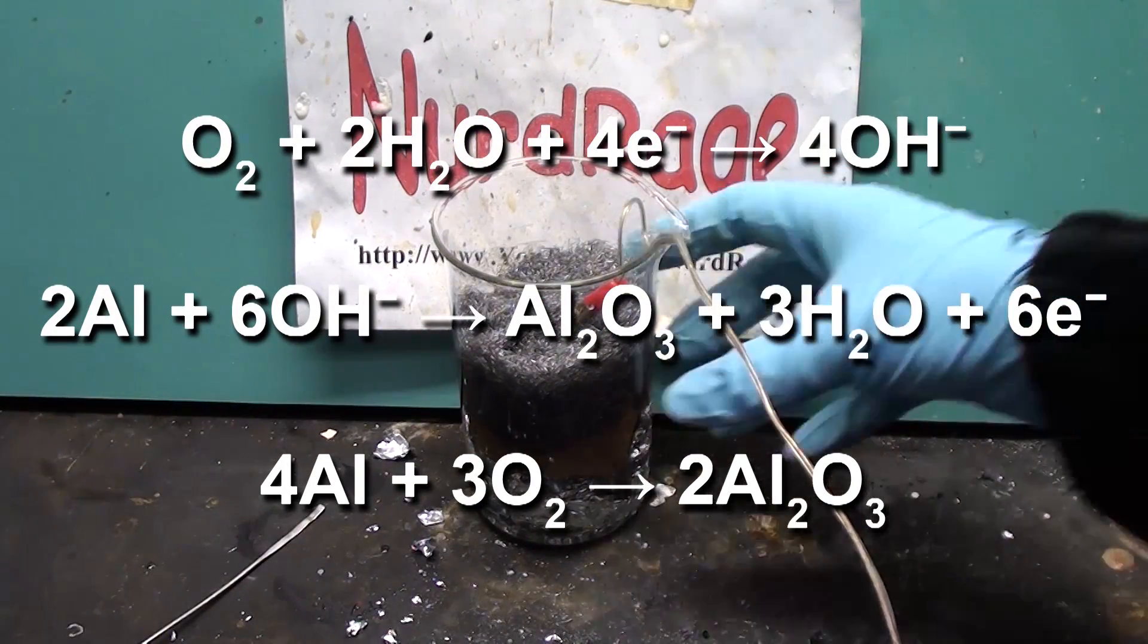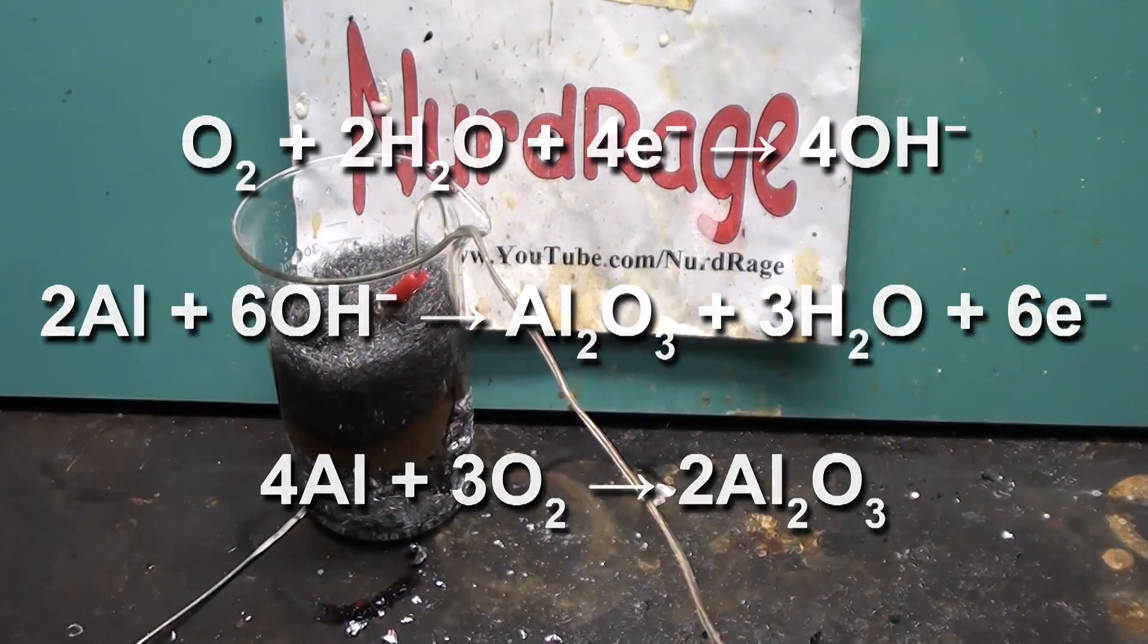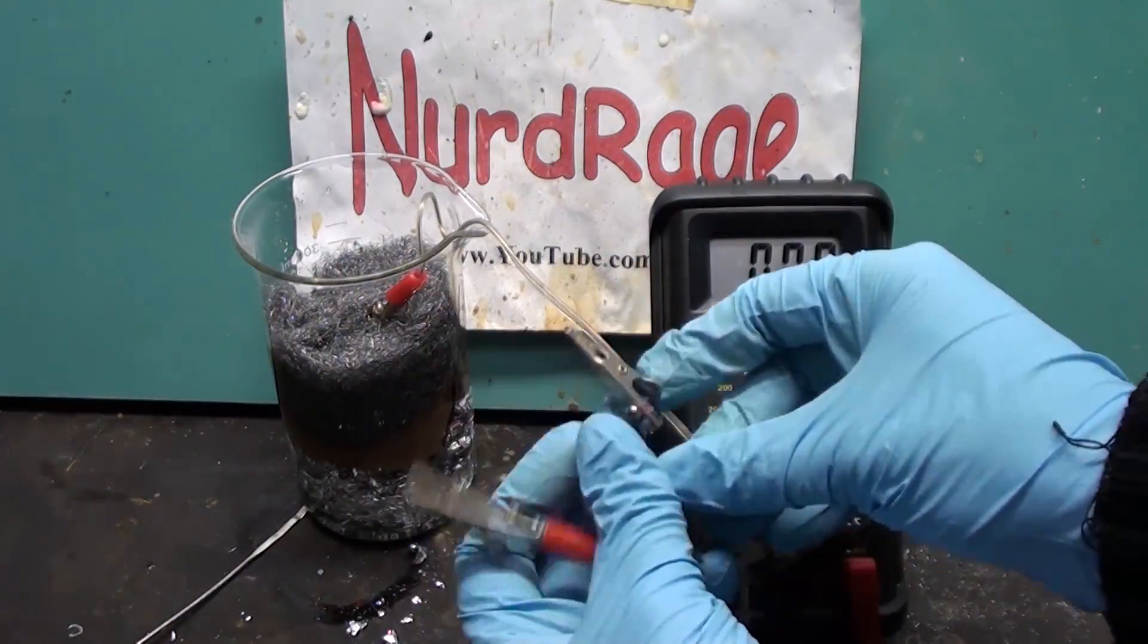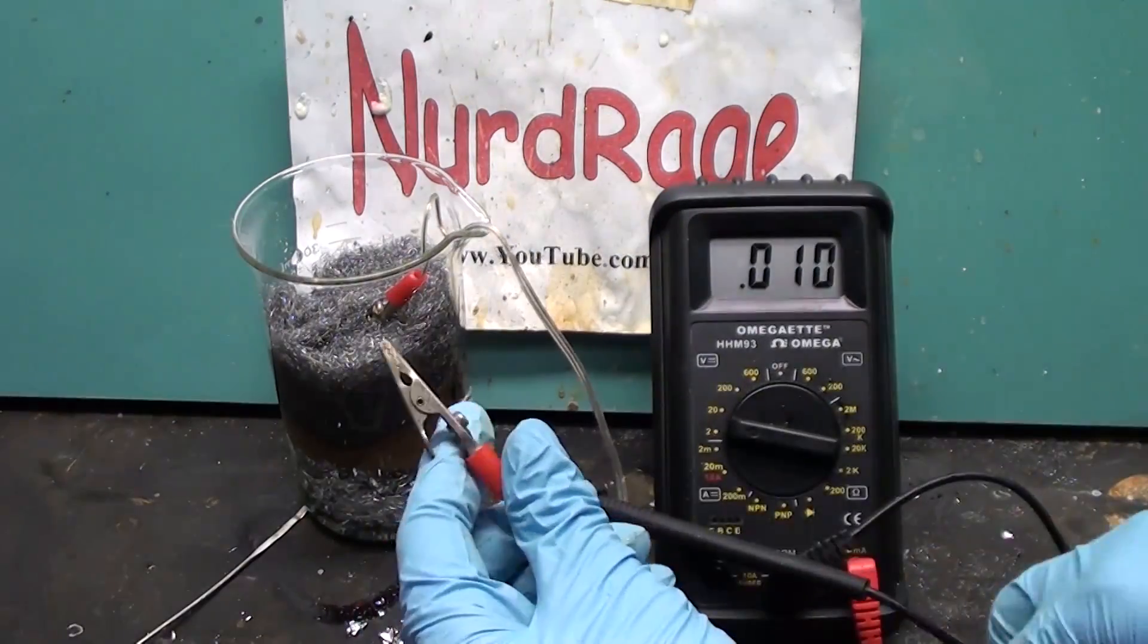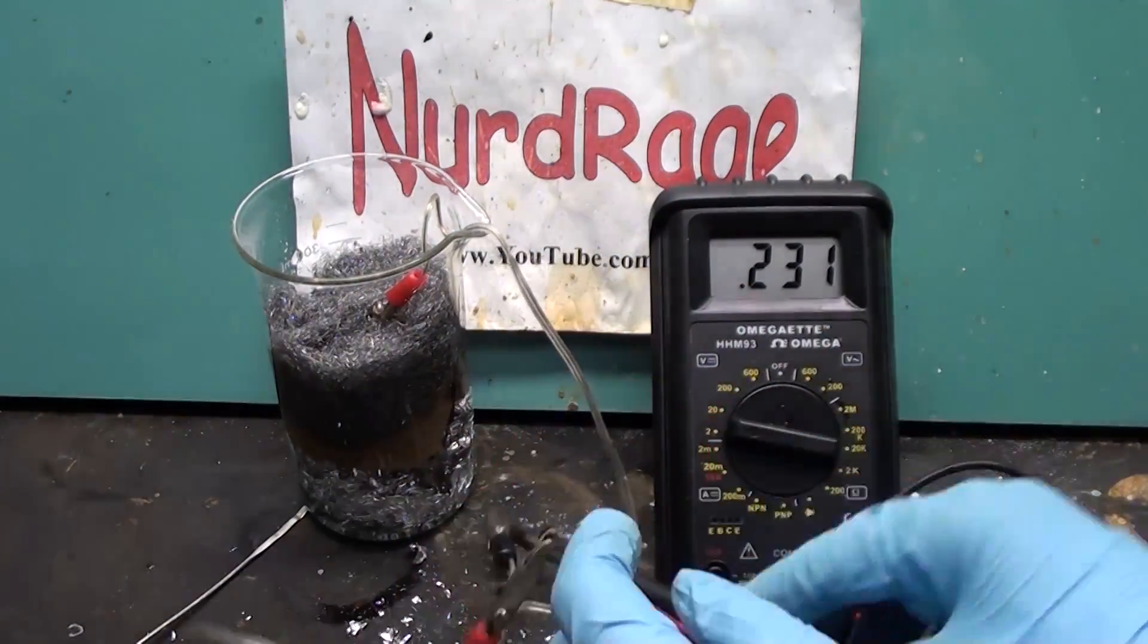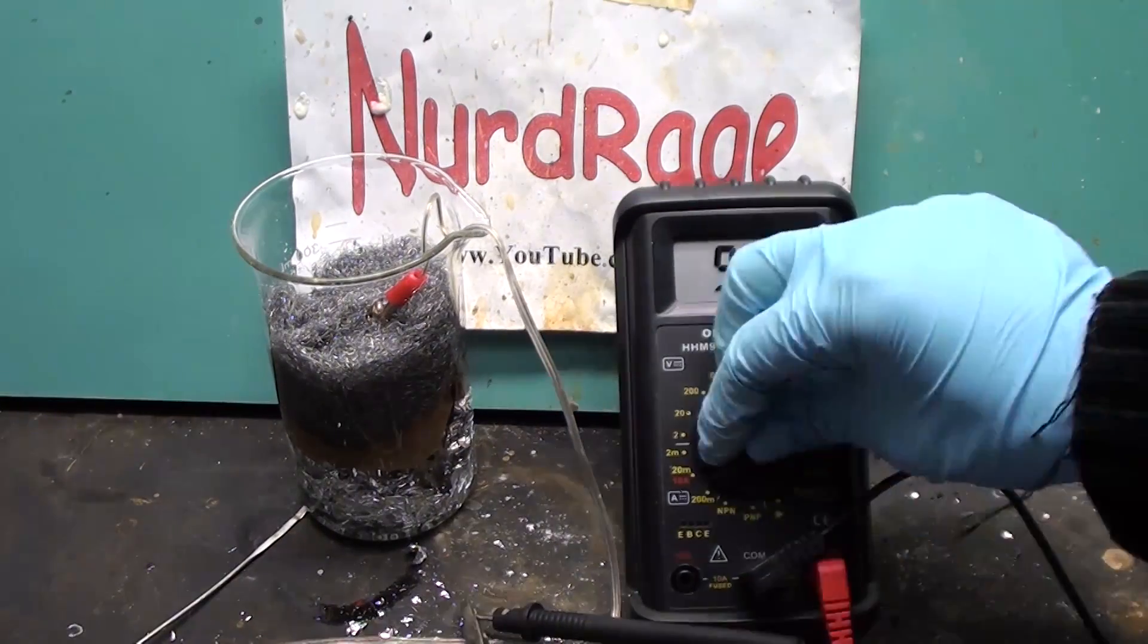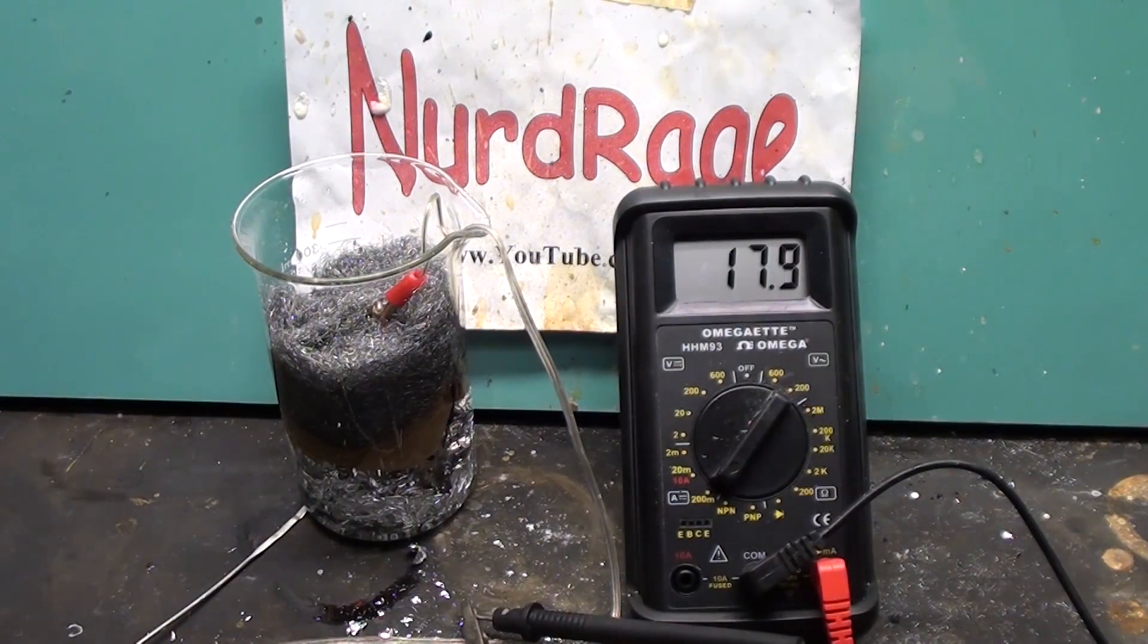Overall the reactants are the aluminum metal and the oxygen in the air. So let's check its output with this multimeter. Connected up to the clips, we can see the voltage is around 0.23 volts give or take. The current is pretty low at less than 20 milliamps.